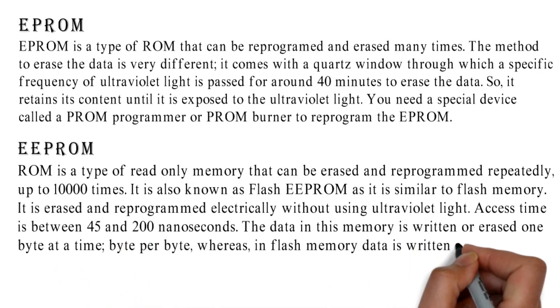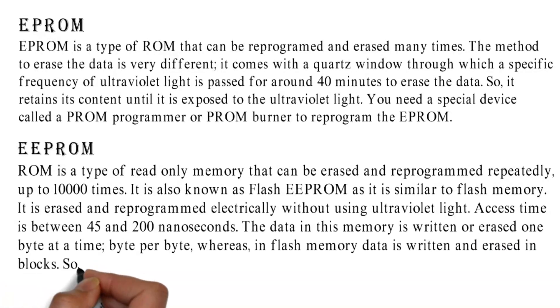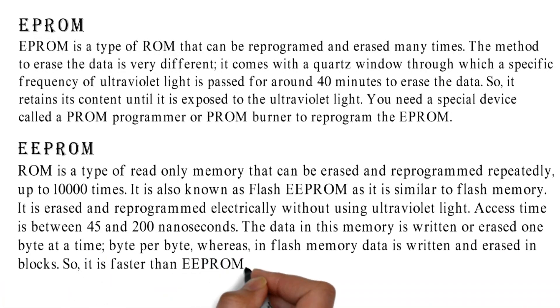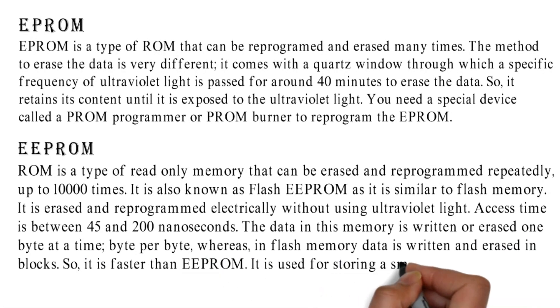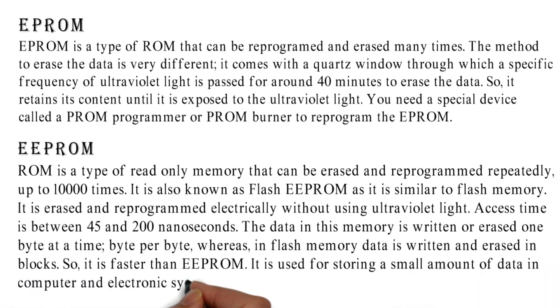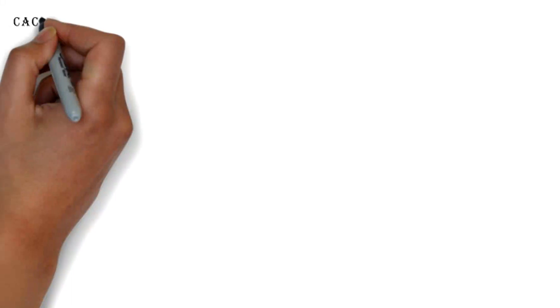Whereas, in flash memory data is written and erased in blocks. So, it is faster than EPROM. It is used for storing a small amount of data in computer and electronic systems and devices such as circuit boards.